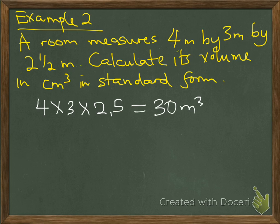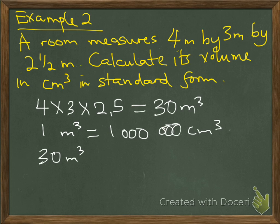Since it is a volume, we are multiplying three sides: length times width times height. Therefore, we know that 1 cubic meter is equal to 1,000,000 cubic centimeters. Therefore, it means 30 cubic meters will be equal to 30,000,000 cubic centimeters.